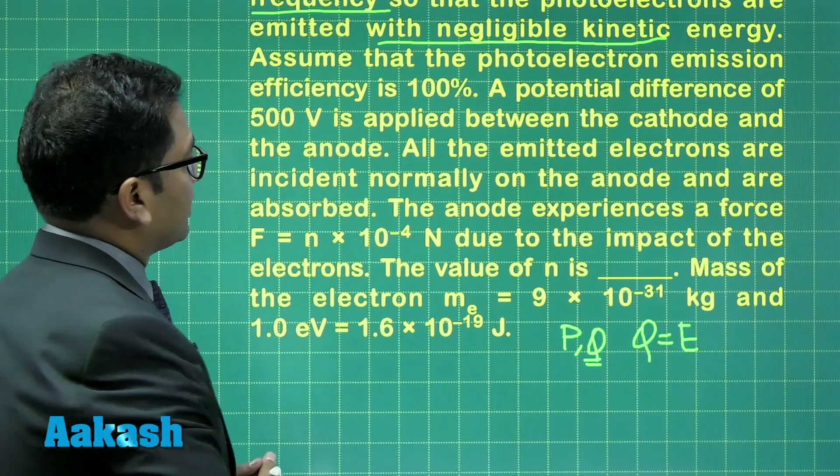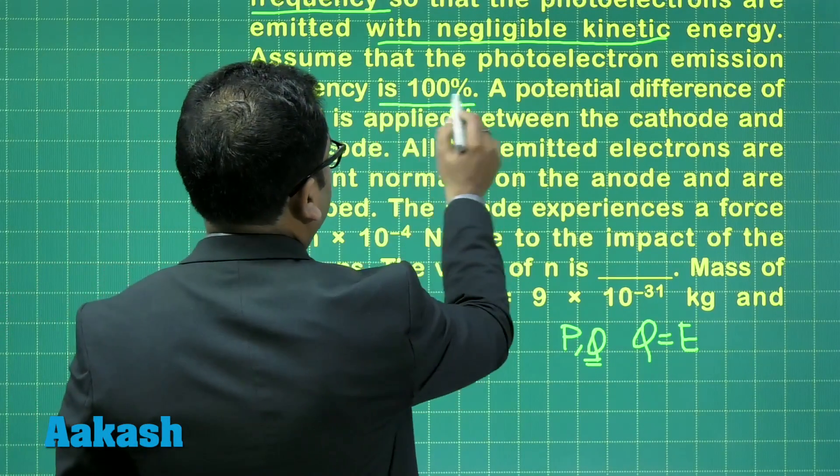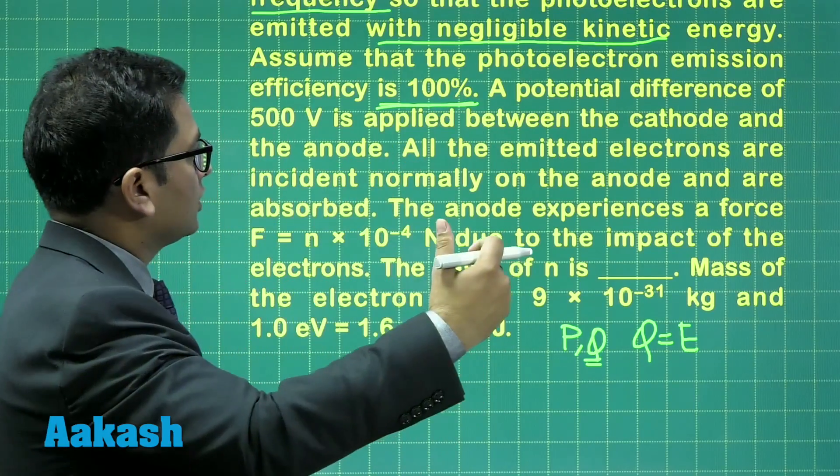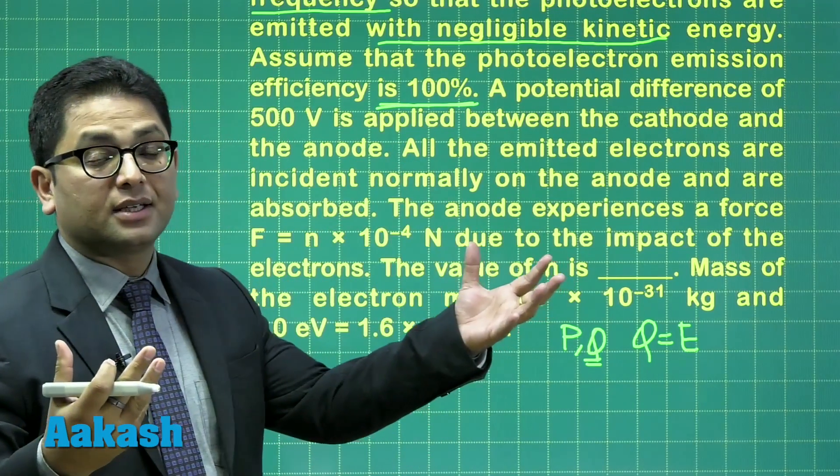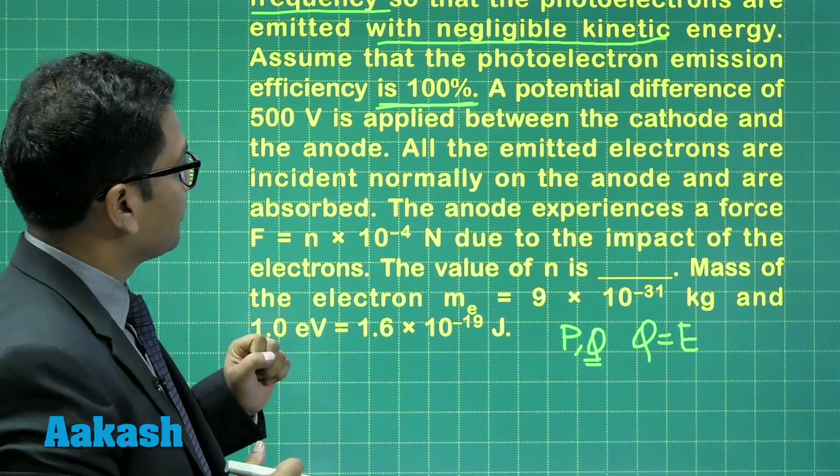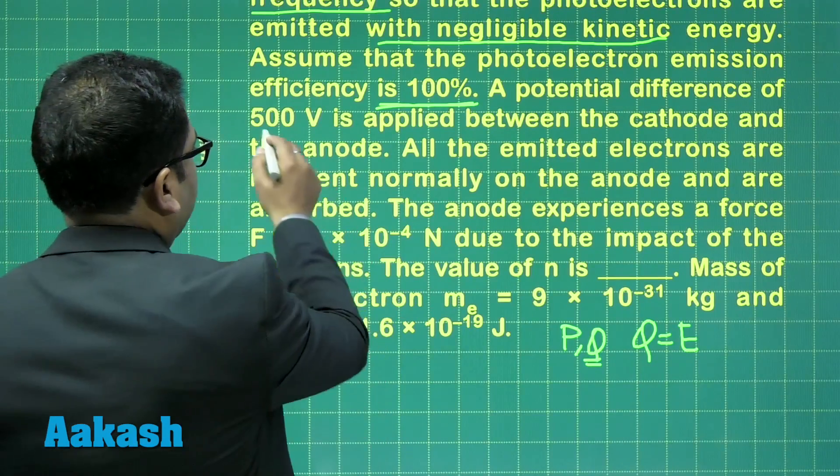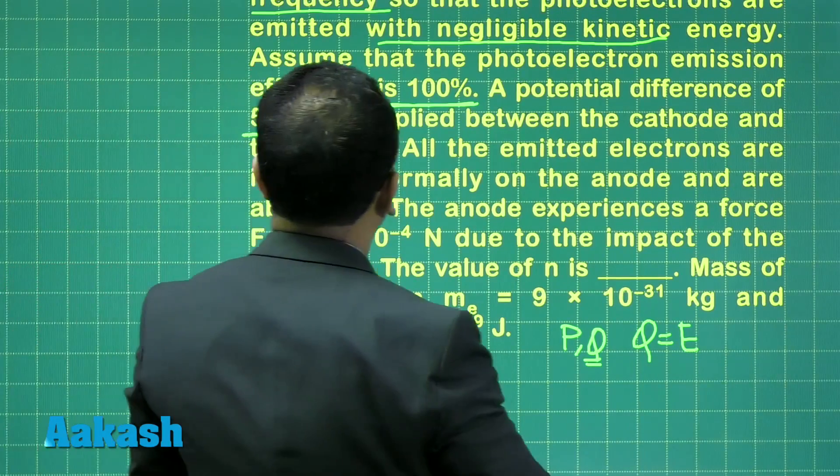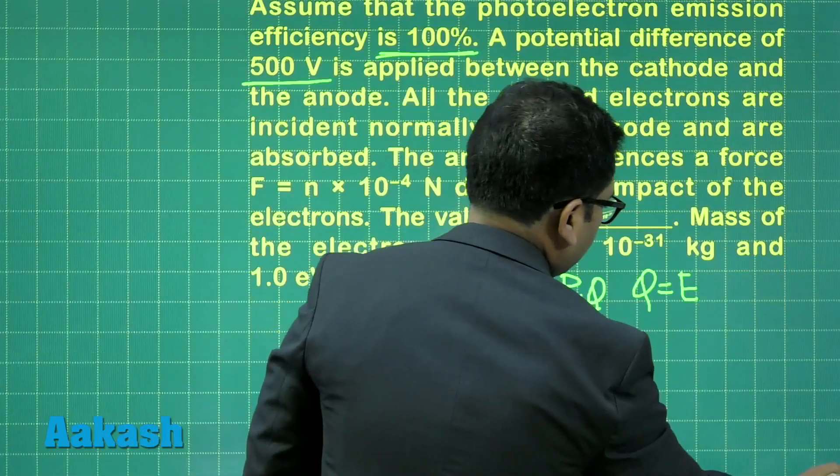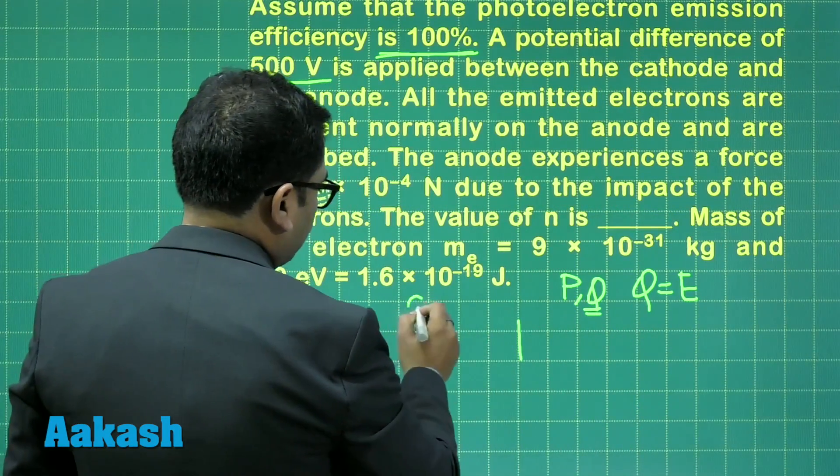And then assuming that the photoelectric emission efficiency is 100%, that means for one photon, there will be one electron emitted. Normally, the efficiency is not 100%, but here it's given. After that, see the electrons come out. A potential difference of 500 volt is applied between the cathode and the anode. In other words,